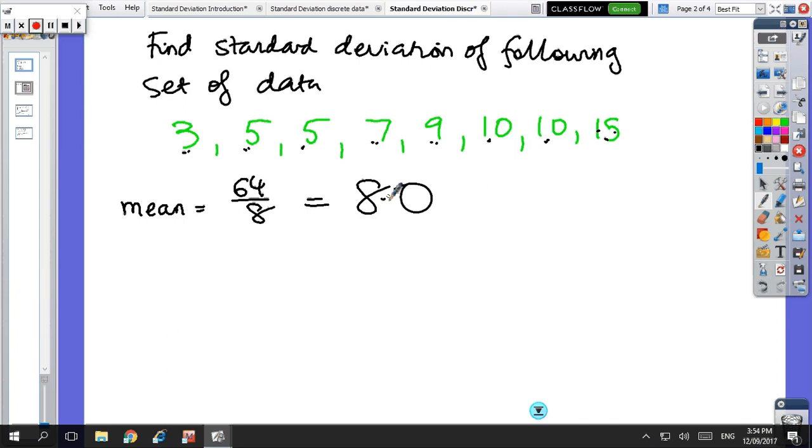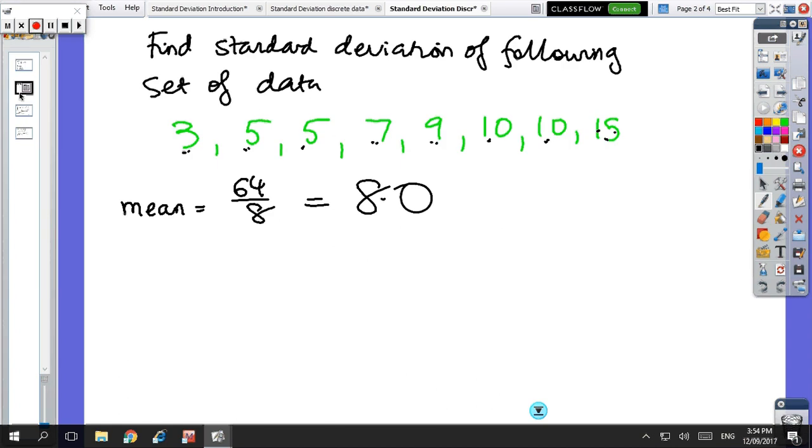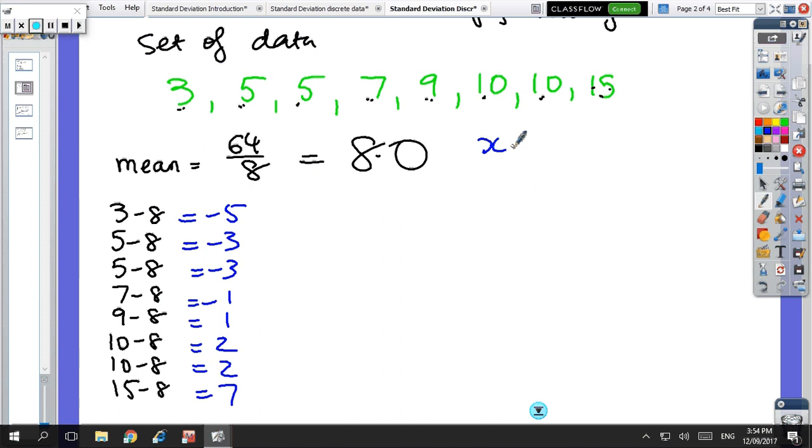Now I did that on purpose to make the subtractions easy. So in the formula, I've got to take the score and minus the average, and I'm going to square the number later. So 3 minus 8, 5 minus 8, 5 minus 8, 7 minus 8, 9 minus 8, 10 minus 8, and 15 minus 8. So I do those calculations, and they're pretty quick. So I've got minus 5, minus 3, minus 3, minus 1, 1, 2, 2, and 7. So what I've done is I've done my x minus x bar.